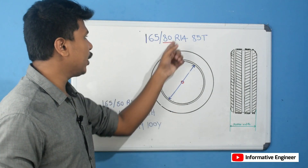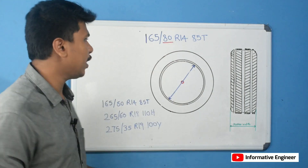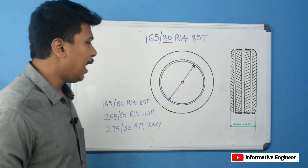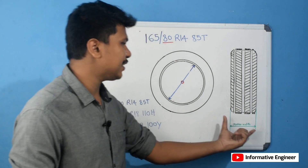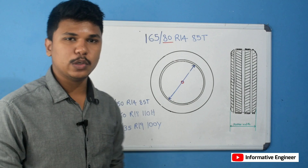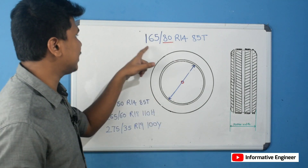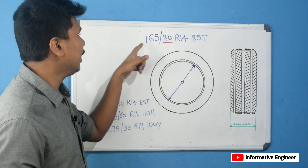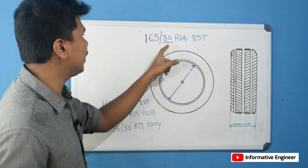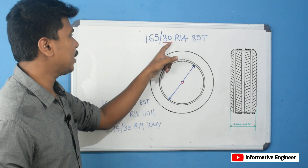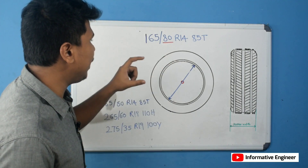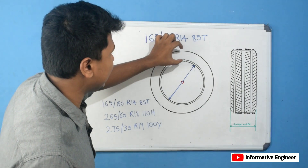This is the ratio expressed as a percentage. The aspect ratio is the section height divided by the section width. The actual section height is calculated from this ratio. For example, the section height based on the aspect ratio and the section width gives us the actual sidewall height in millimeters.